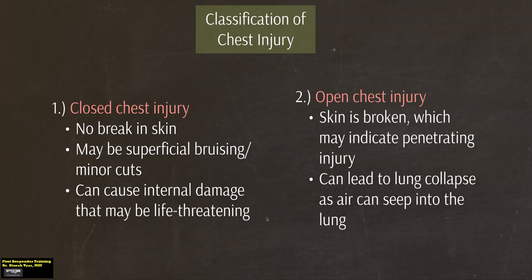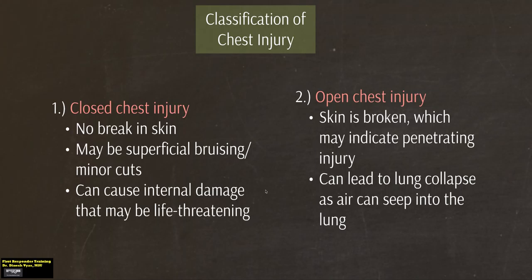We classify chest injuries based on whether it is closed or open. In a closed chest injury, there is no break in the skin; this may be due to blunt trauma, and may show superficial bruising or minor cuts in the chest region, which can cause internal damage that may be life-threatening. In an open chest injury, the skin is broken, which may indicate penetrating injury such as from a knife or a bullet, and this can lead to lung collapse as air is able to seep into the lung region.